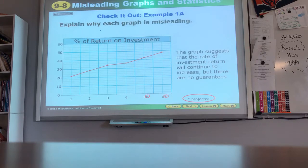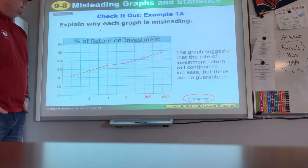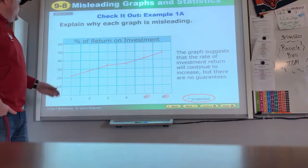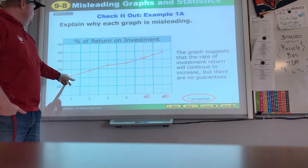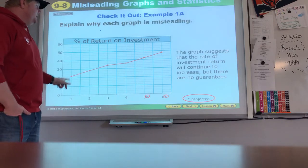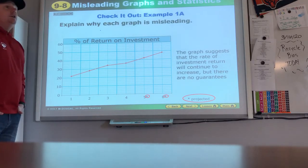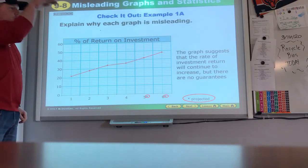Ooh, projected. That asterisk there means they don't actually know what's going to happen in year 5 and year 6. They're projecting it based on previous numbers and they projected it based on the two years of biggest gains. So the graph suggested the rate of investment return will continue to increase but there are no guarantees. Crazy things like the coronavirus can come up and you can see your stock portfolio go down.